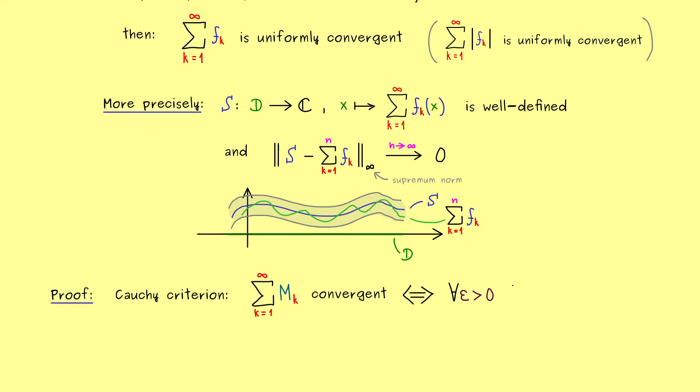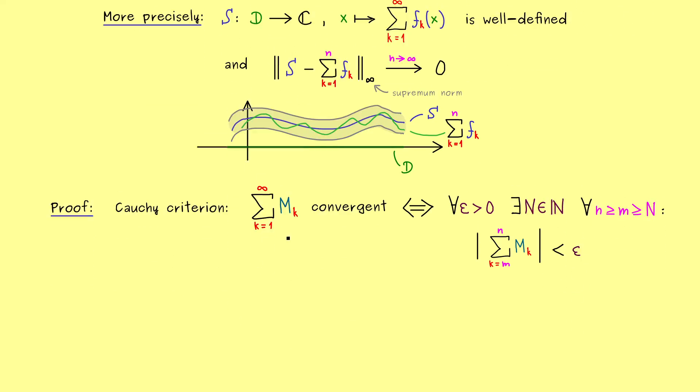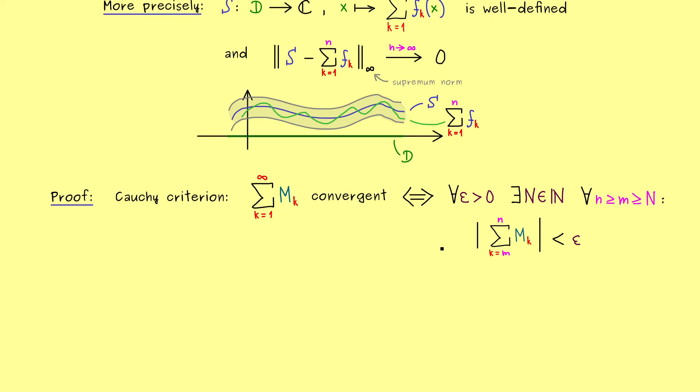Now more precisely, this means that for all epsilon greater zero, we find an index capital N, such that for all indices afterwards, and let's simply call them lowercase n and m, we have that the sum in the absolute value is less than epsilon. And the sum has to go from m to the index lowercase n. So you could just say, this partial sum is arbitrarily small eventually. And now please recall, in the assumption of the theorem, we assume that we have the convergence for the series of mk, which means we have the Cauchy criterion as well.